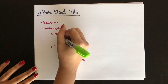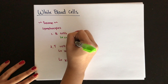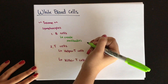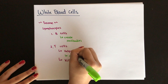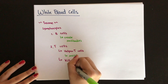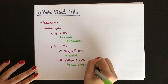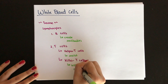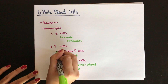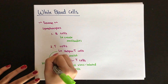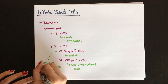B cells produce antibodies that bind to foreign substances in the body and mark them. Helper T cells assist other cells to divide, and killer T cells kill cells that have been infected by a virus. HIV lives within your helper T cells and kills them, and because helper T cells are so important to your other cells, HIV patients are often very susceptible to disease.